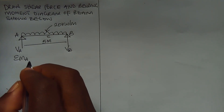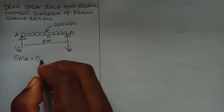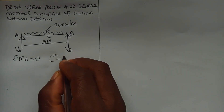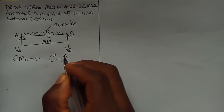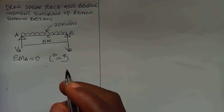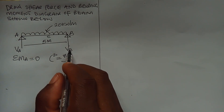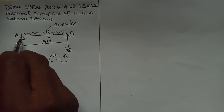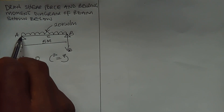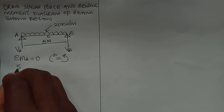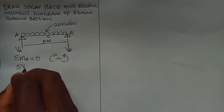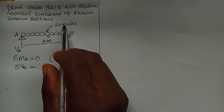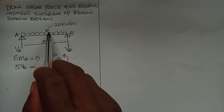Now we're going to take moment at point A, or any point of your choice, equal to zero. Our clockwise turning moment should be equal to anti-clockwise turning moment. In that case, VB is going to cover a distance of five meters in the clockwise direction to point A, so we have 5·VB equal to this UDL, and this UDL will cover a distance of what...